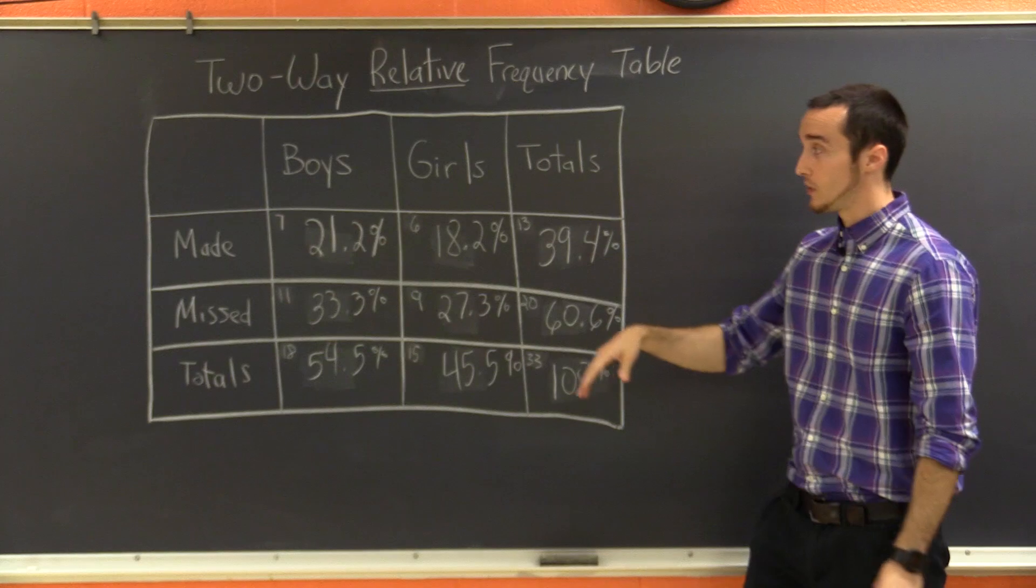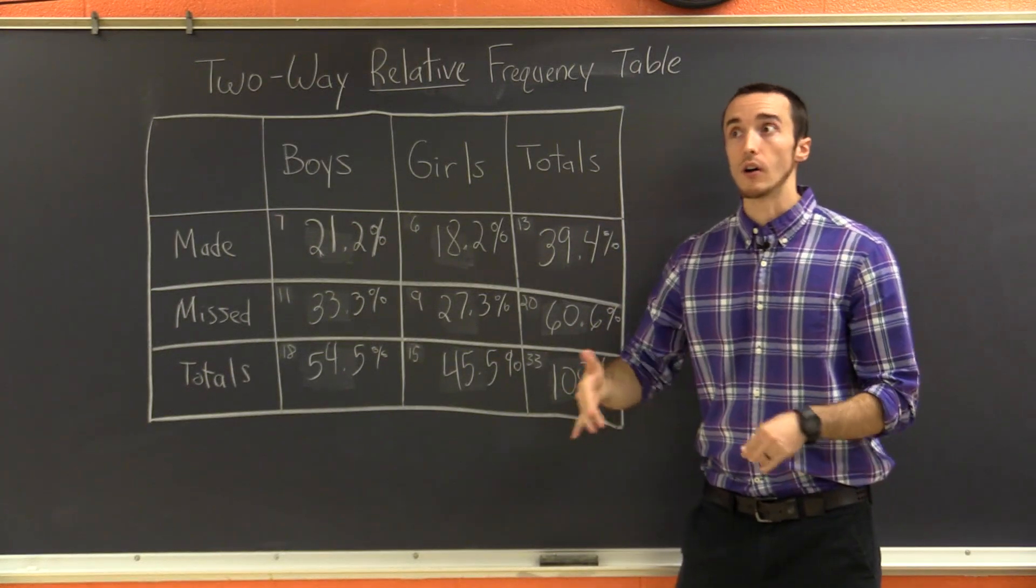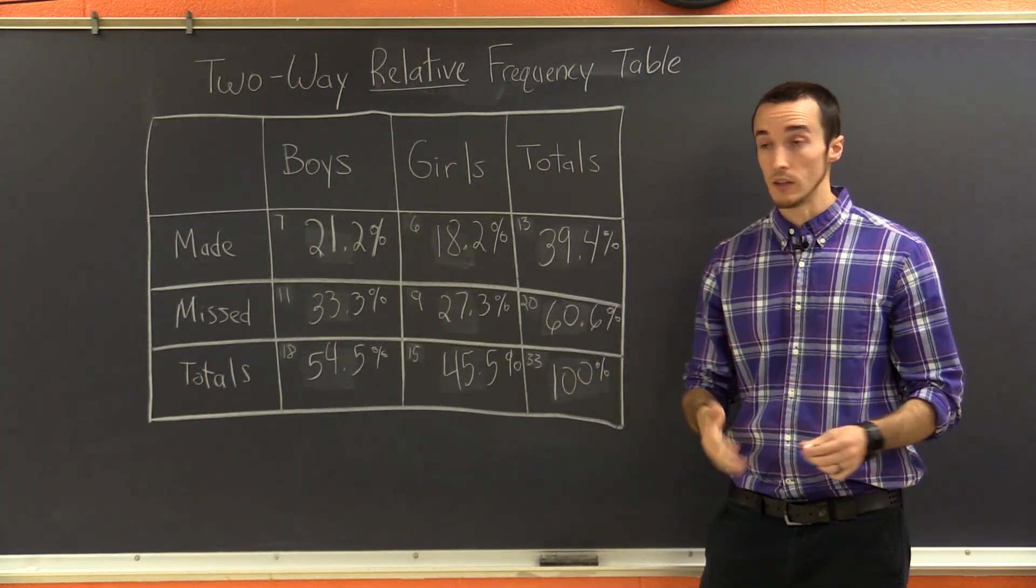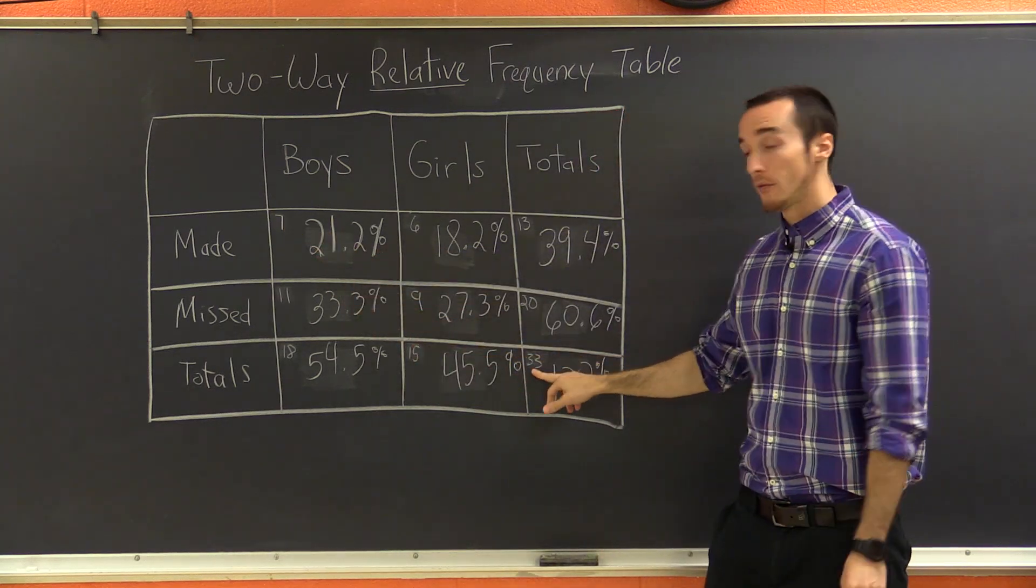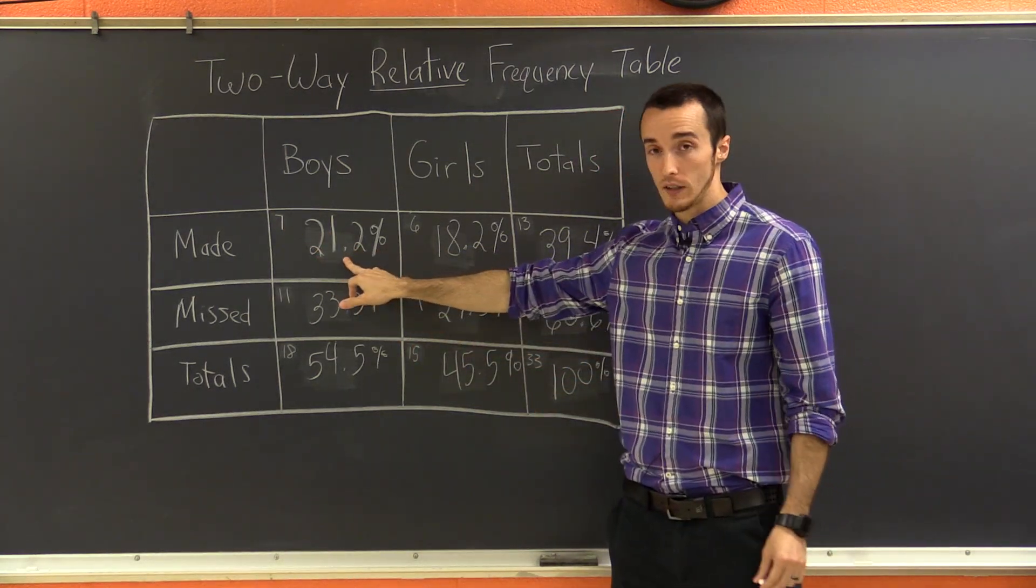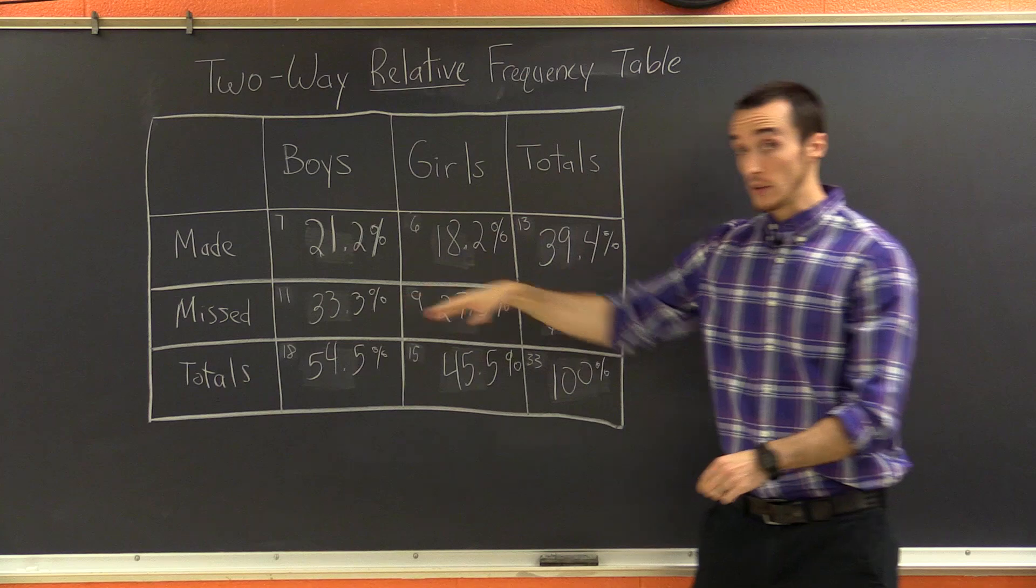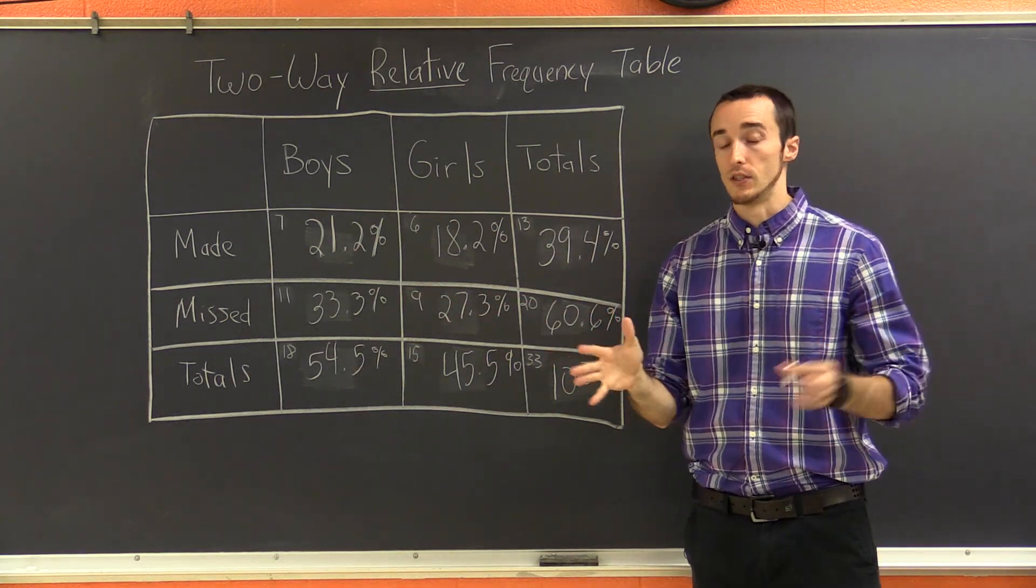Now, in the two-way relative frequency table, we've already turned our raw data into percentages. So like there were seven boys who made a basket, and that was out of 33 total. So as a percentage, that's 21.2%. That's where all the percentages come from. Now, let's talk some definitions.